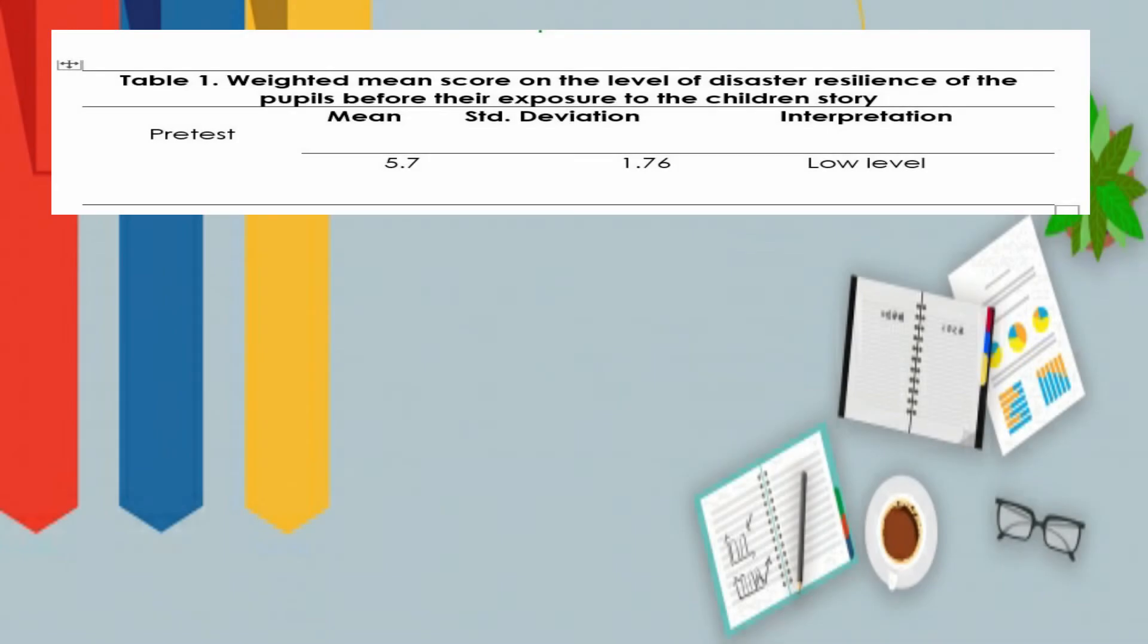Table 1 shows the results imply that there is a need to improve the participants' disaster resilience. The shift of the platform from face-to-face drill to online was perceived as the main reason why they had a low level of disaster resilience due to the unavailability of gadgets in attending virtual earthquake drills during pandemic.